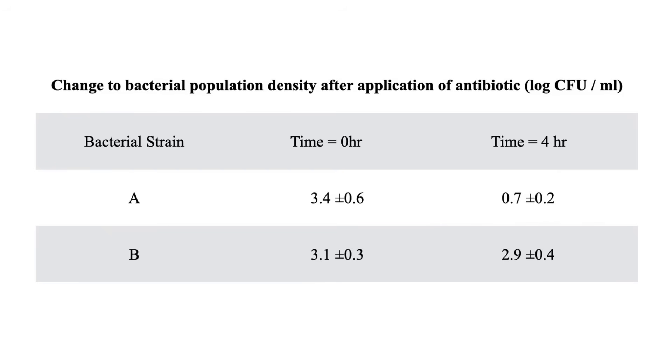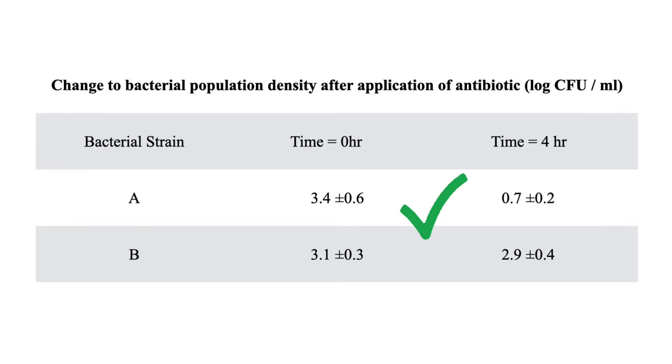In certain ambiguous circumstances like these, the AP exam will explicitly ask you to draw either a bar graph or a scatter plot. However, in cases where that's not given, we still need to make the ultimate decision. In this example, we see a table that contains two factors that could act as independent variables — one is time, with time 0 and time 4 hours, and the other is bacterial strains A and B. Our dependent variable is the number of colonies observed on a growth plate.